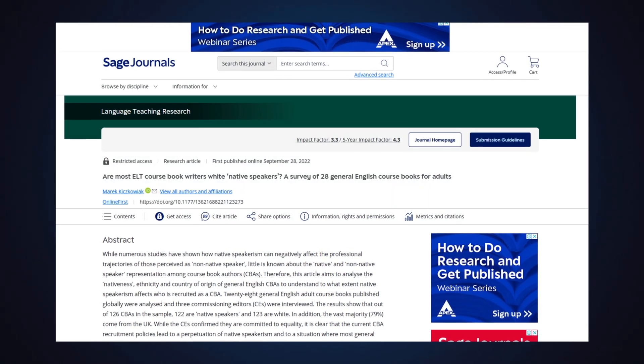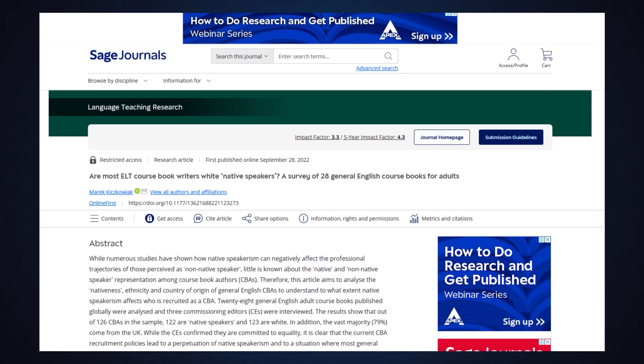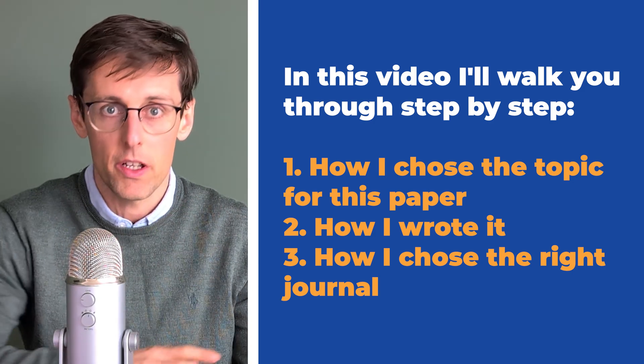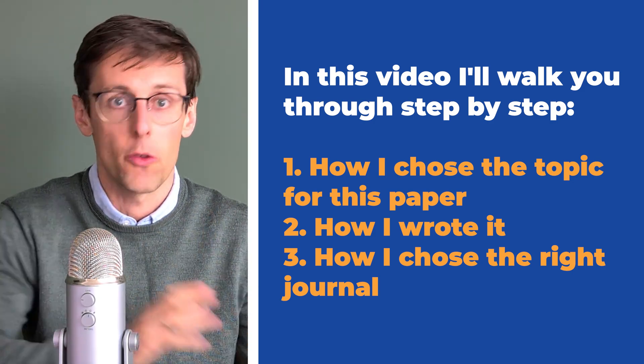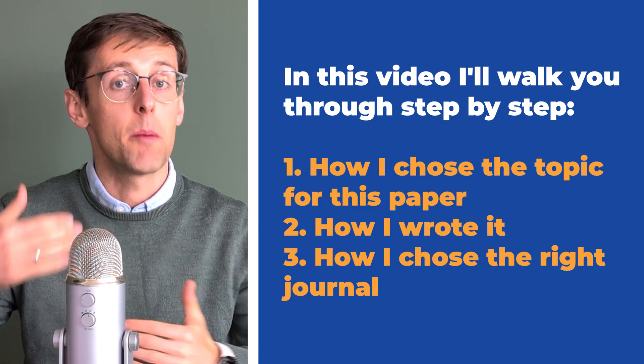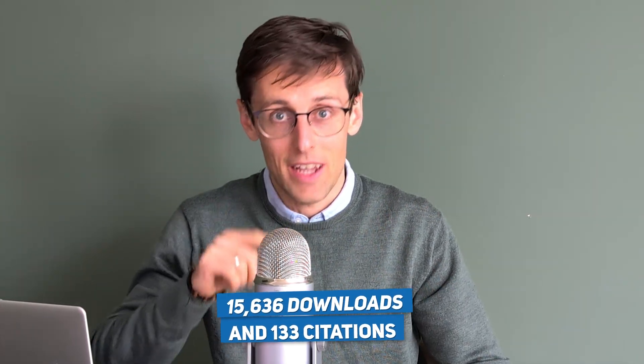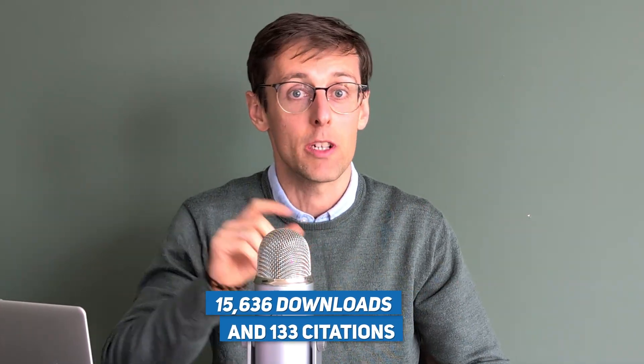This is exactly what I did to publish my first paper in a Scopus index journal. In this video I'll walk you through step by step how I chose the topic, how I wrote it, and how I chose the right journal so you can copy me and publish your next paper in a Scopus index journal. As a bonus, I'll also share how this paper became my most cited paper with 15,636 downloads and 133 citations, which boosted my authority and helped me get better academic positions.